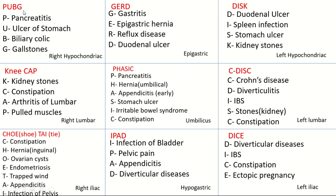If you look carefully, there's also a chain pattern linking the mnemonics. The right hypochondriac mnemonic starts with P and ends with Z; the next box starts with Z and ends with D; the next starts with D and ends with K — forming a chain. Then K links to the next starting with K, then P to P, and C-C-I-I-D-D-E all the way to the last box. This chain pattern may also help you remember the mnemonics.